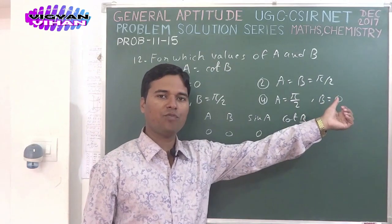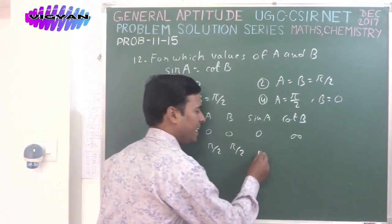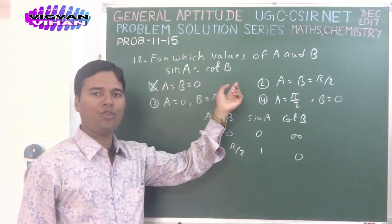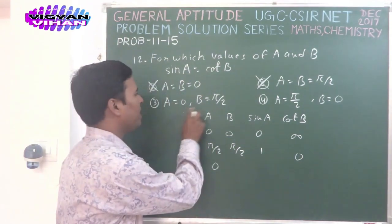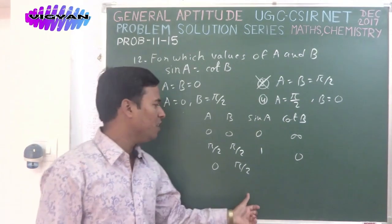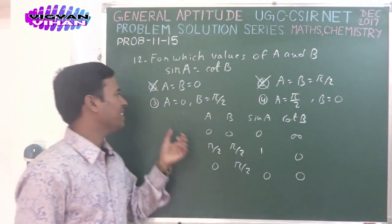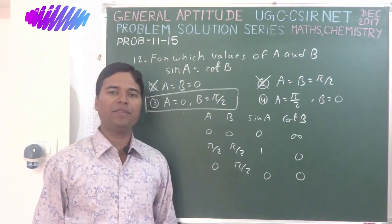For the third option, a = 0 and b = π/2. cot(π/2) = 0, and sin(0) = 0. So sin(a) = cot(b) is satisfied here. Therefore the correct answer of this problem is option 3: a = 0 and b = π/2.